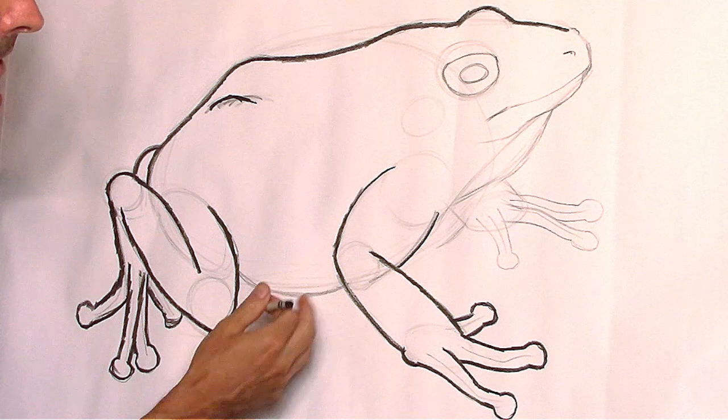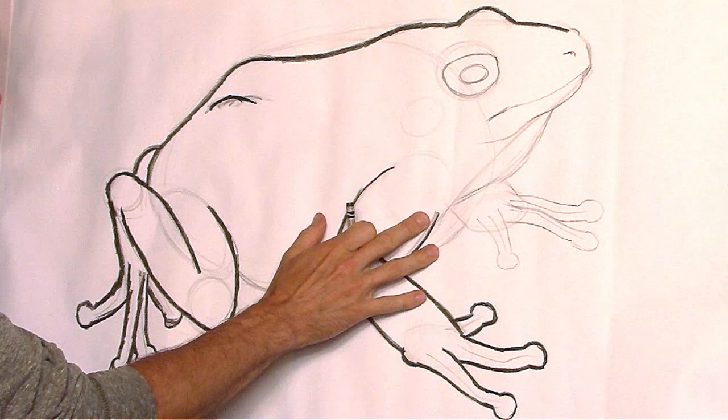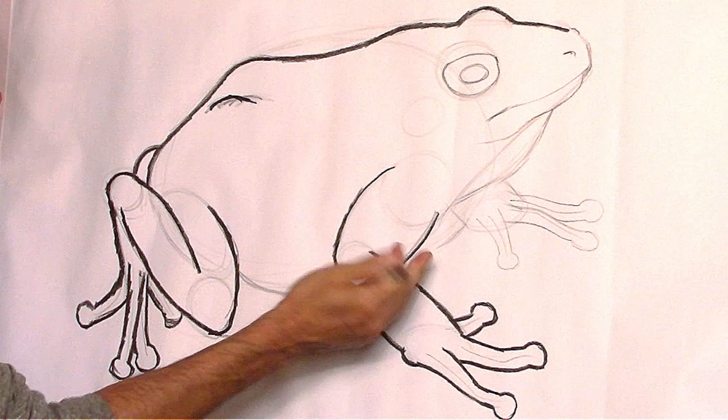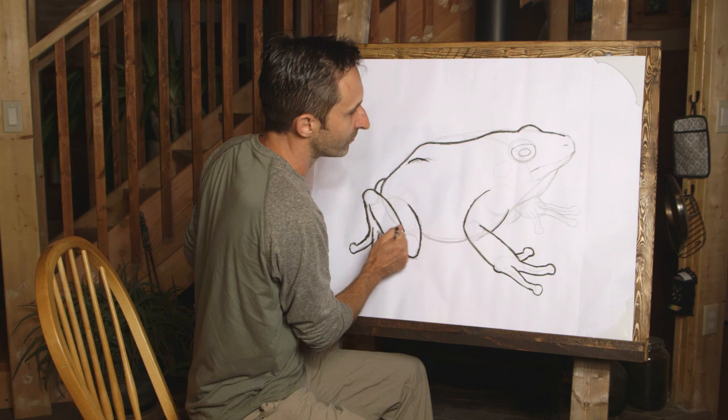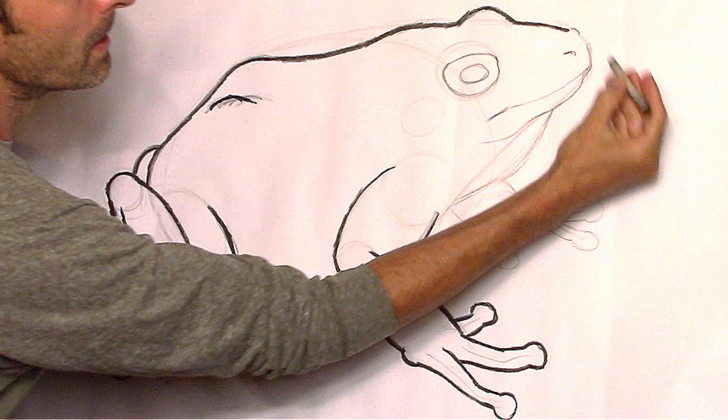Before finishing this foot, I want to complete the face so we know exactly where to stop the foot lines — we don't want to extend them past the throat. Now, the vocal sac does become somewhat translucent when inflated, but it's not inflated here, so we shouldn't see anything through it. We'll finish up these areas first before tackling the foot.